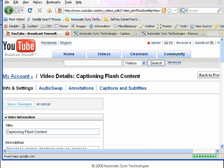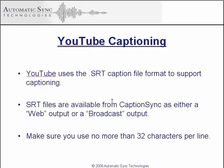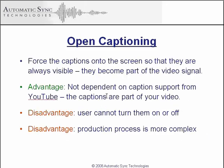Alternatively, you can choose to open caption your video. In open captioning, you force the captions onto the video screen so that they are always visible — they become part of the video signal. The advantage is that you don't require any captioning support by the player, so these captions are inherently supported by all players that can display video, including YouTube. There are two disadvantages, however: the user cannot control the captions or turn them on or off, and the production process is slightly more complex.